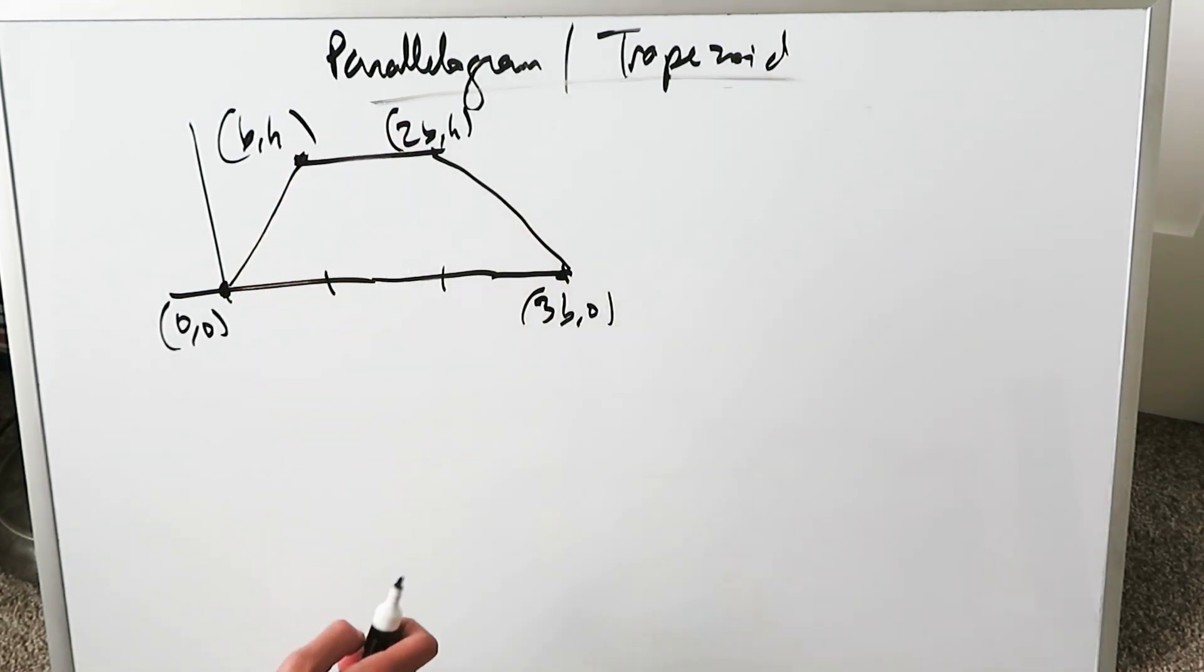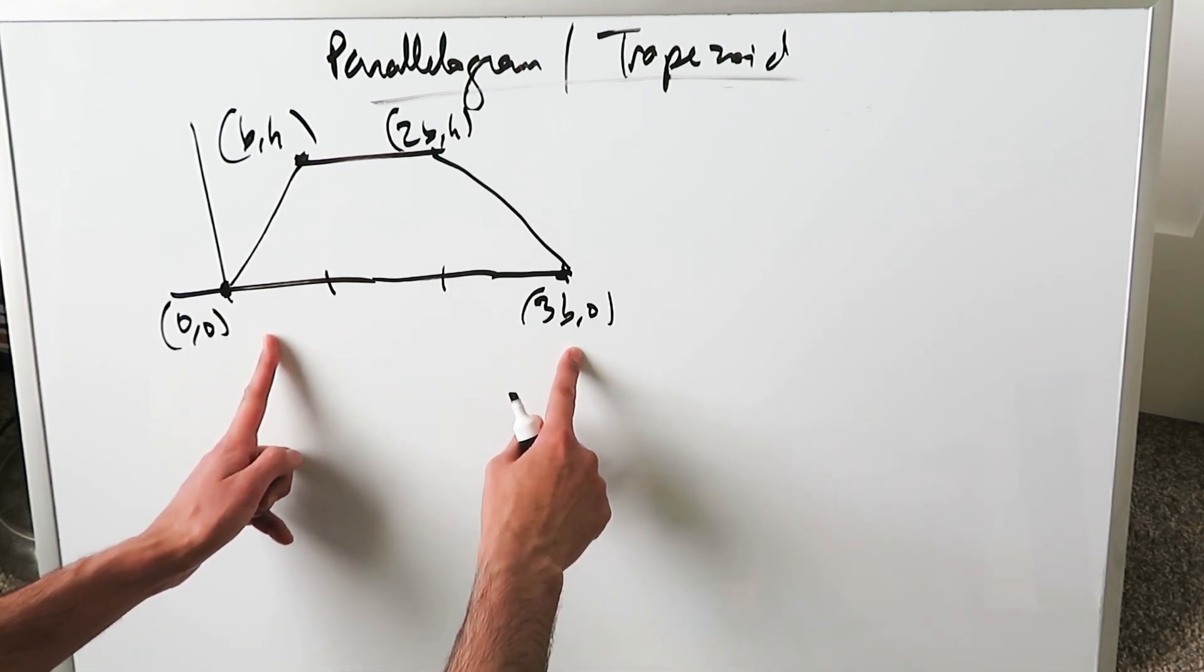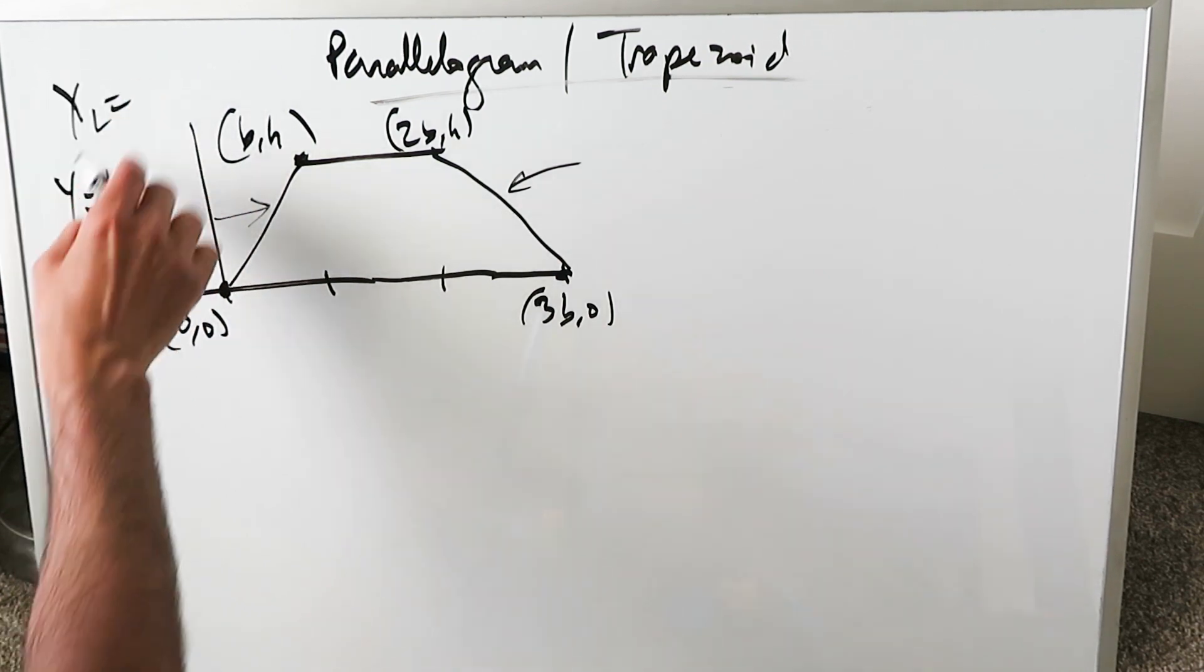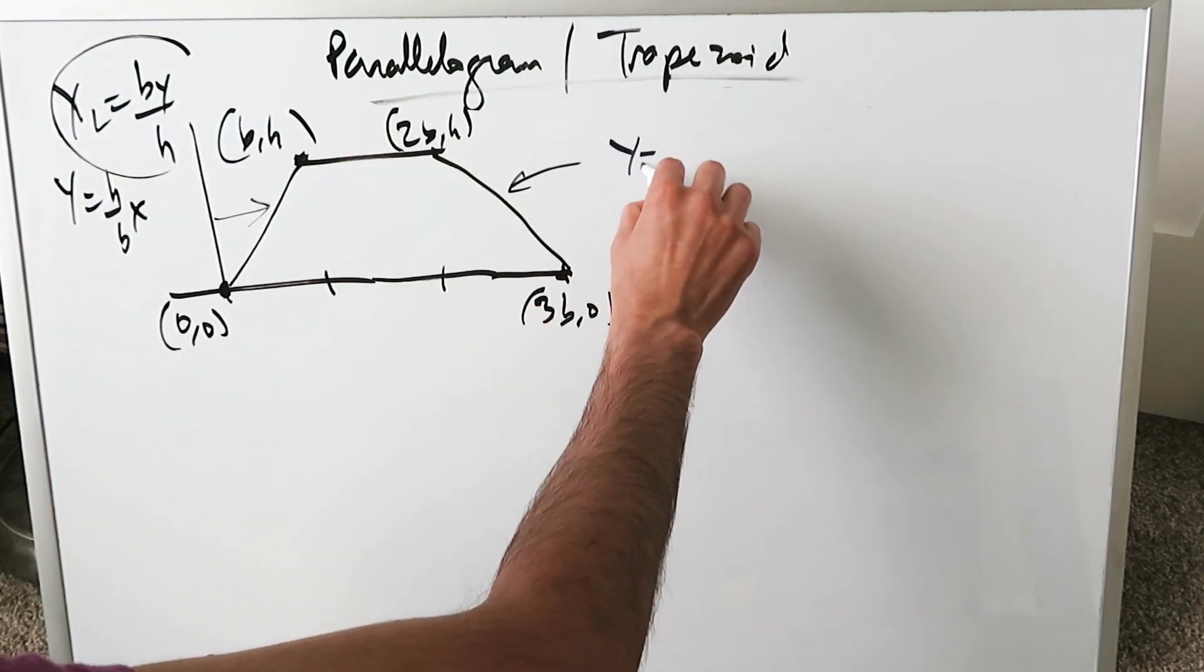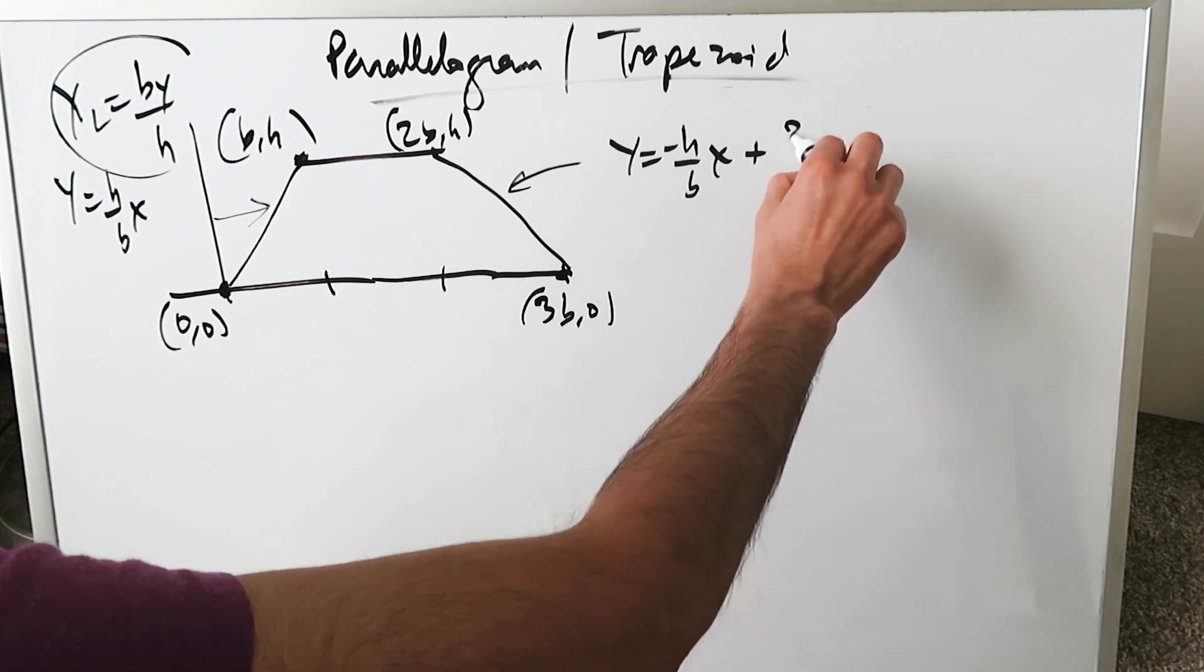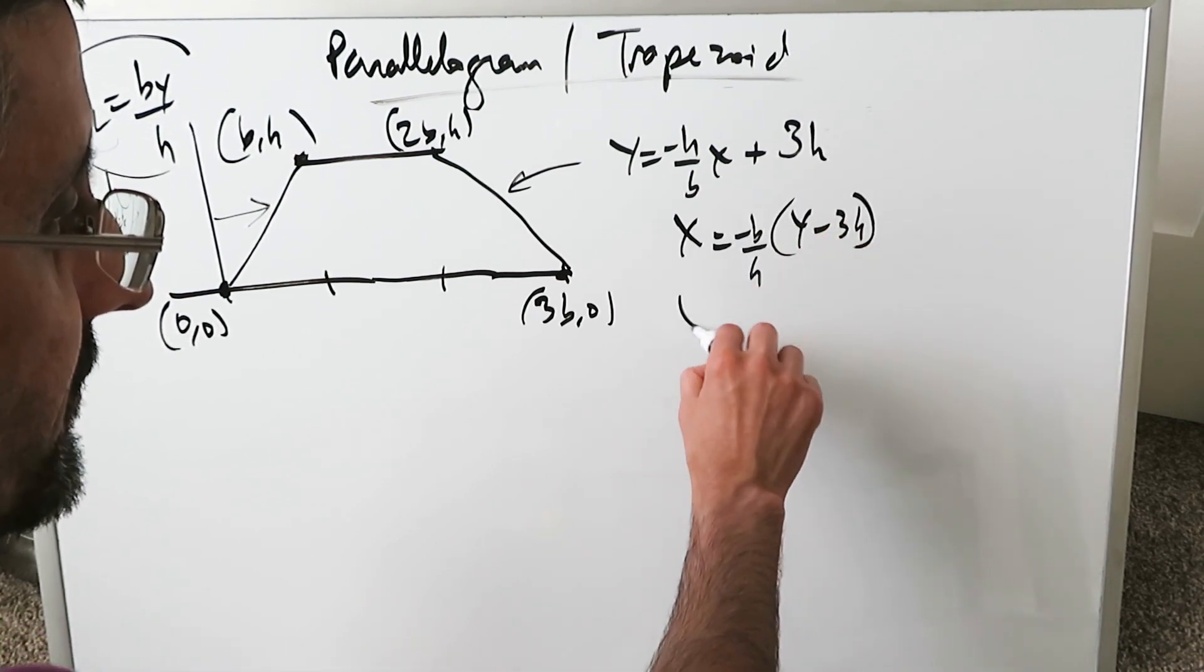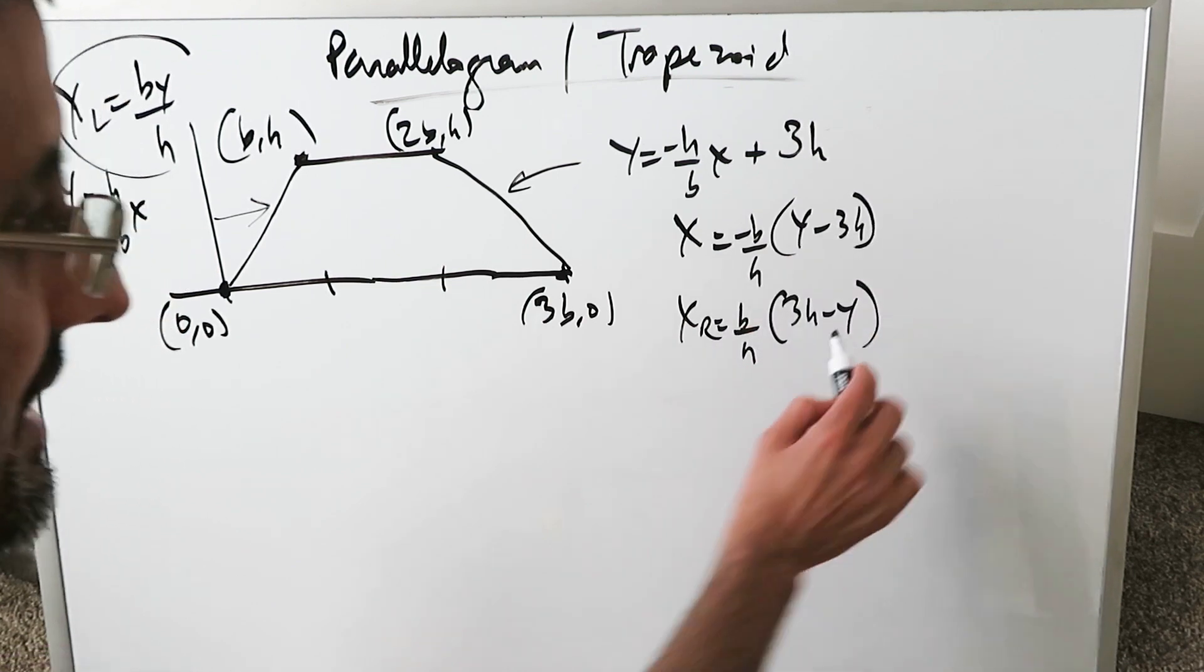This is the area we have to determine. We'll take the x-axis dx integral and integrate upwards. I need the equation of this and this. The equation is y = (h/b)x, so the left boundary curve is x = by/h. That's one. Now let's determine this. Slope is -h/b, and the y-intercept is 3h. Solve for x: x = (y - 3h)(-b/h). Flip things around: x = (b/h)(3h - y). That's your right boundary curve.